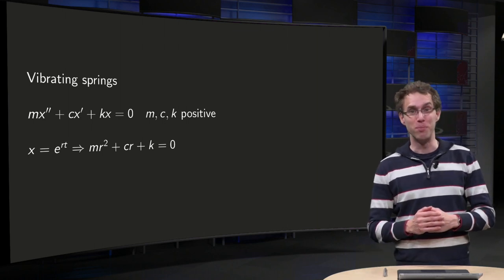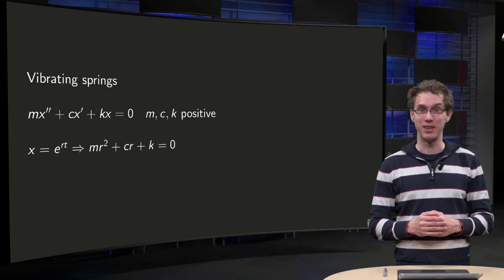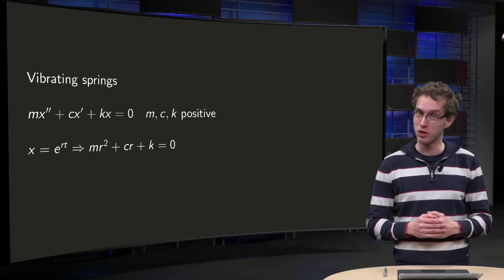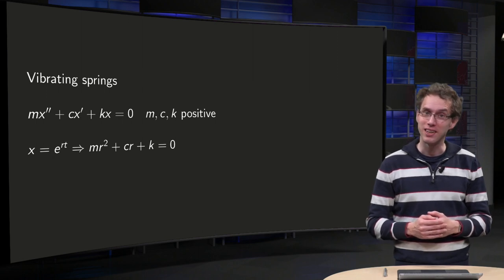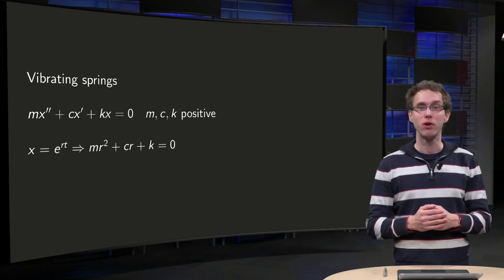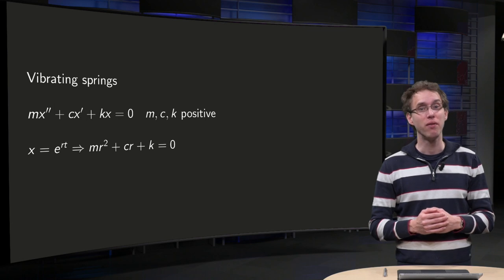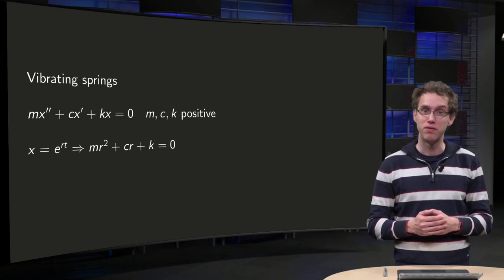We have modelled the motion of a mass on a spring by a second order linear differential equation with constant coefficients, which means that we can solve this problem analytically. In this video we will look at the different solution regimes and we will also learn what these different regimes mean physically.